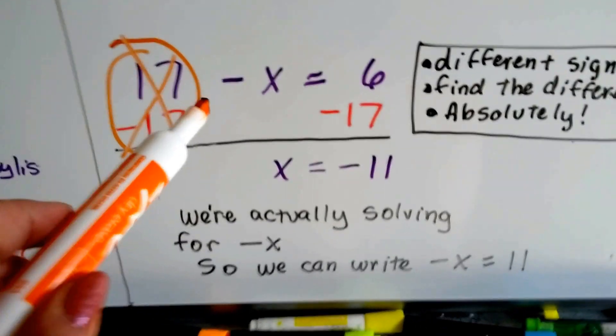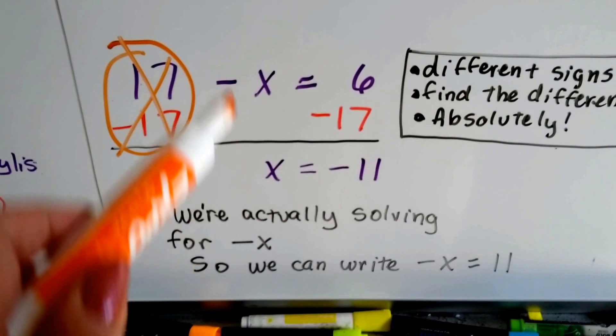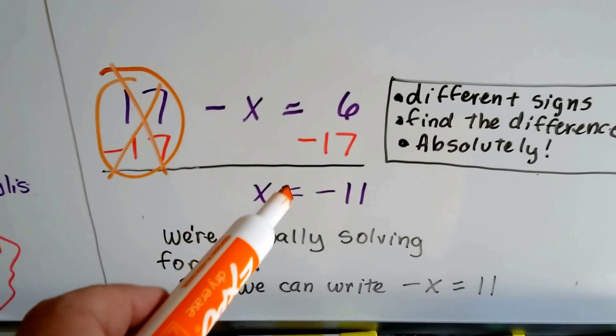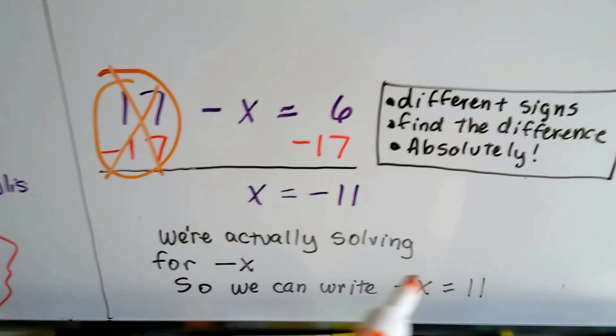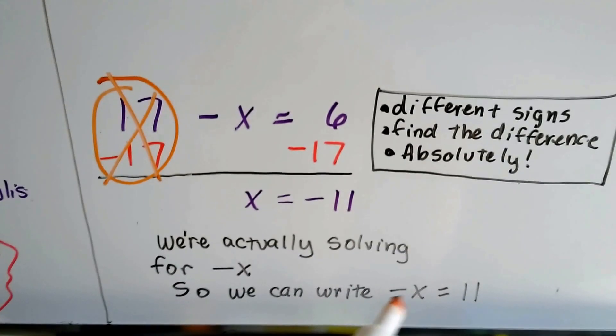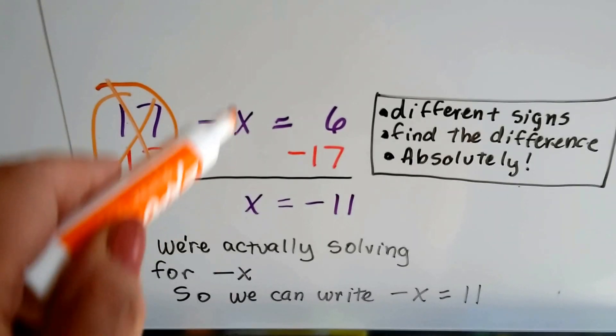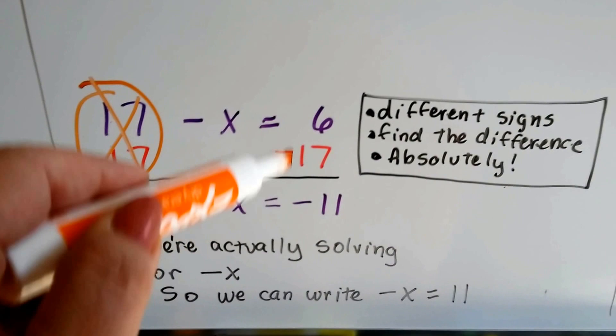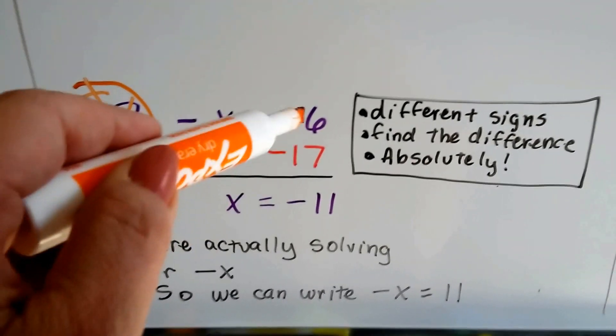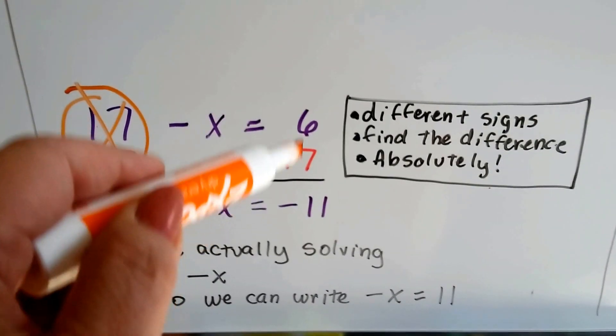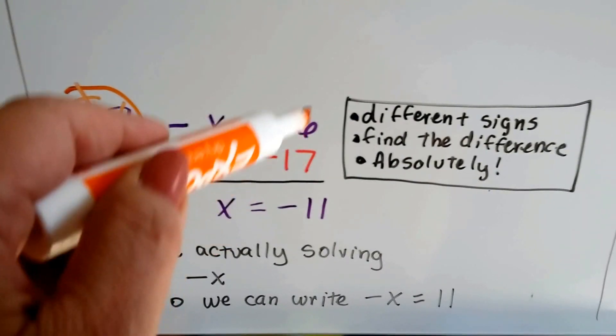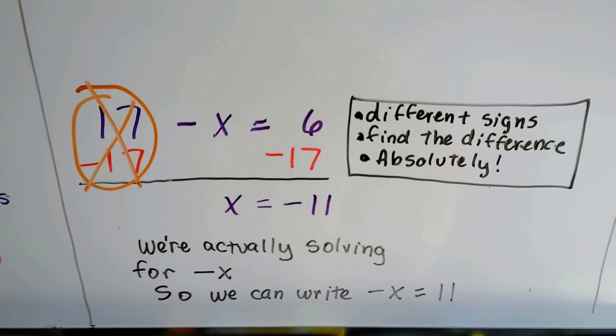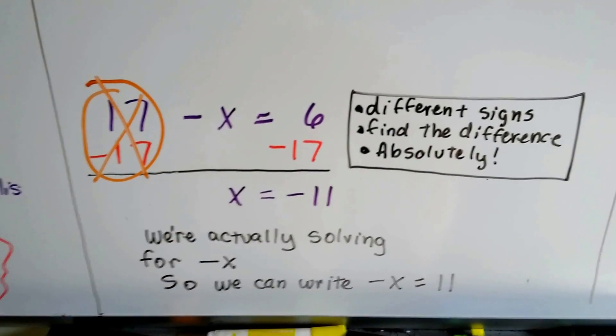Now, what's actually left, because we're actually solving for negative x, that's what's left here. Negative x equals negative 11 is an acceptable answer. Or we can just say x is equal to negative 11. So remember, this is a positive, that's a negative. And when we're adding different signs, we find the difference. The difference between 17 and 6's absolute values is 11. And then we take the sign of the larger absolute value, that's 17, which is a negative. So we get negative 11.